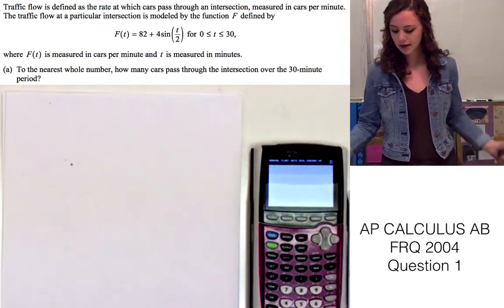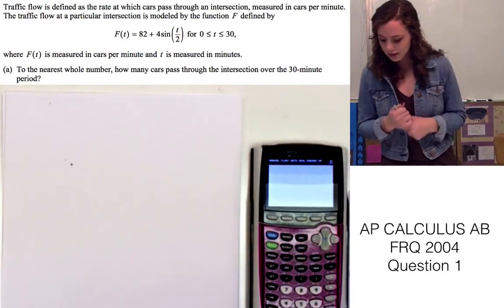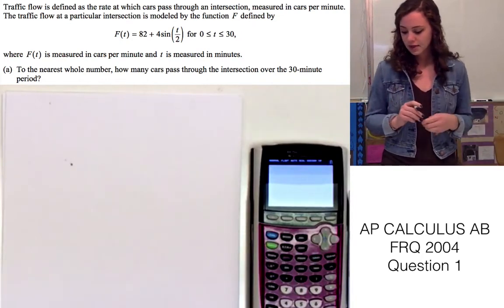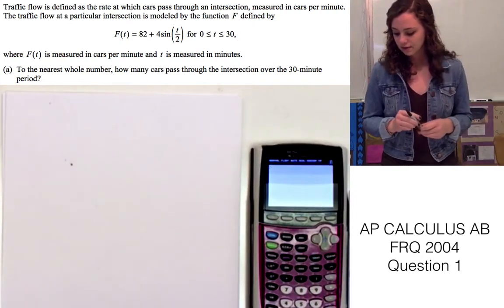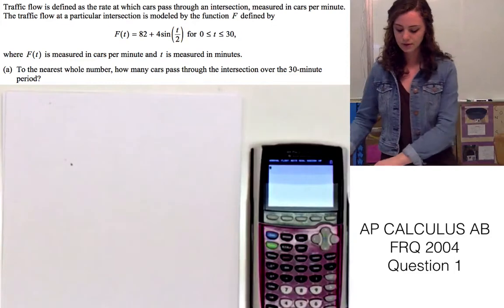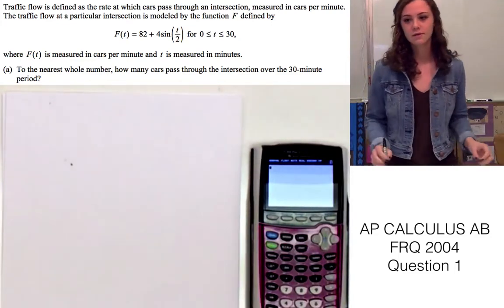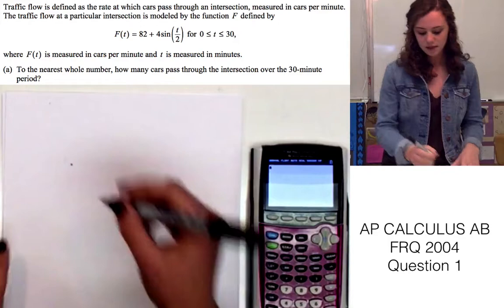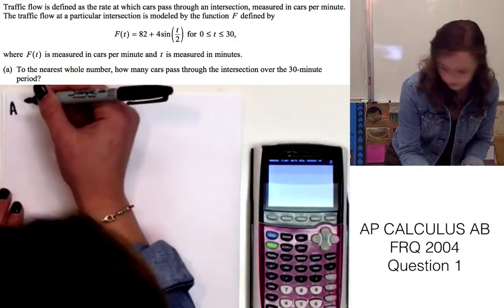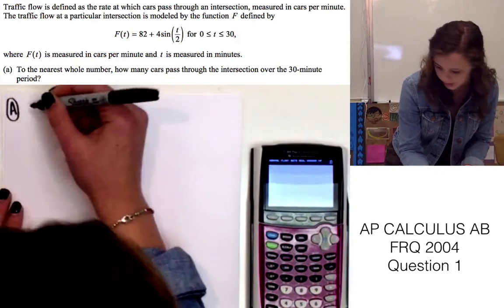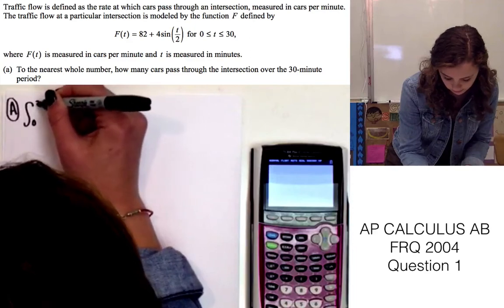Okay, so for part A, it's asking to the nearest whole number how many cars pass through the intersection over the 30 minute period. So since it's asking for the number of cars, we're going to want to take the integral of function f(x). So for A, we want to do the integral from 0 to 30.